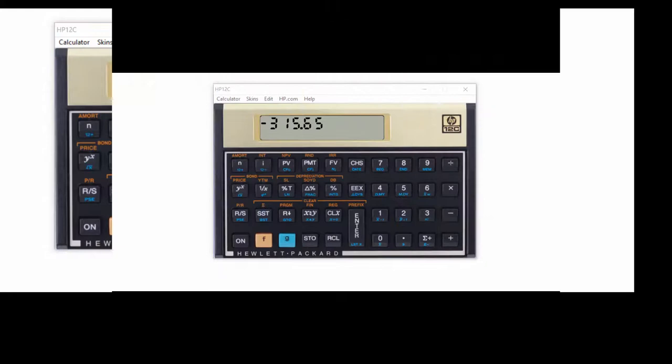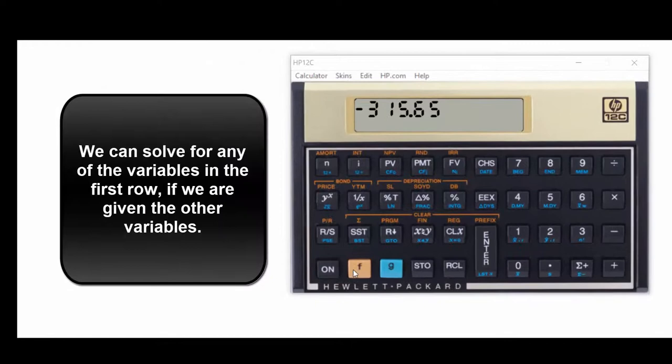So that's how you find the payment. We can also work backwards to solve for, say, the I. Let's clear everything out. Hit F and that's the clear finance button, so all that stuff is cleared out. If that number up there bothers you, hit F and that'll clear all the registers.